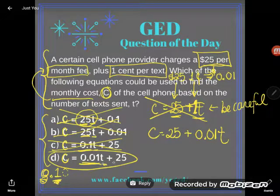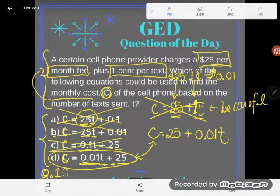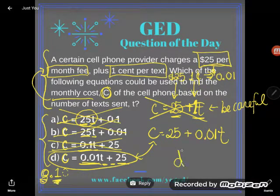So it must be this one right here. They're charging us one cent per text and they're charging us that $25 monthly fee. Their equation might look a little different, but it's equivalent to mine. And so D is the correct answer here.